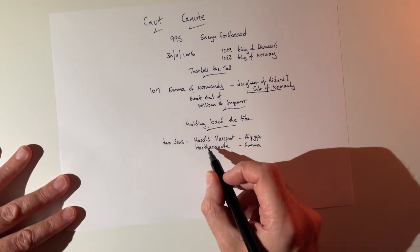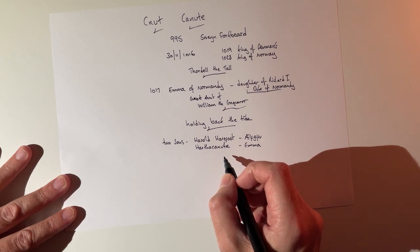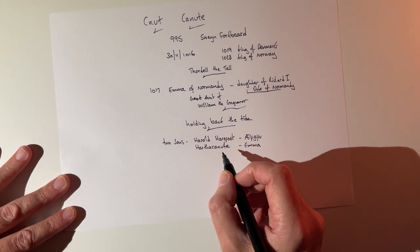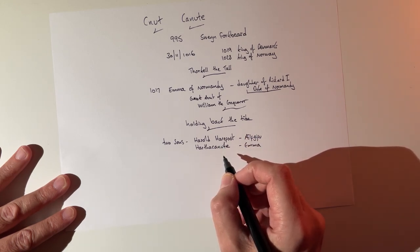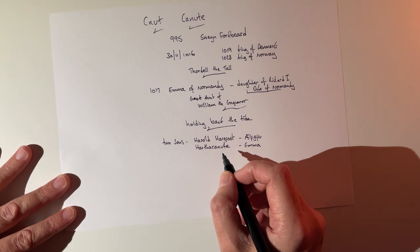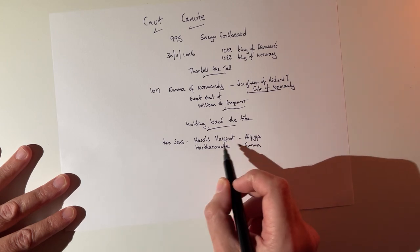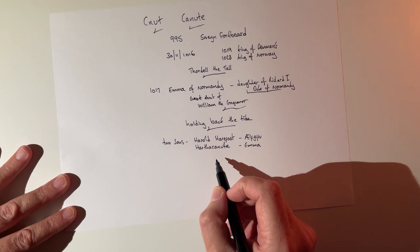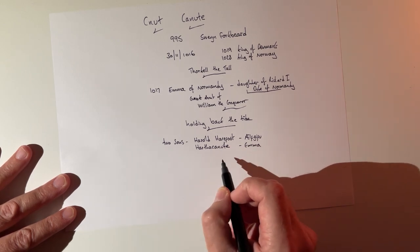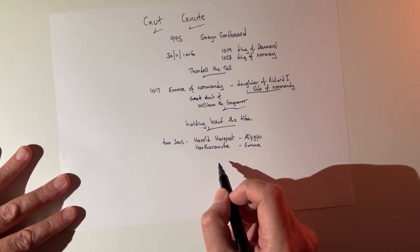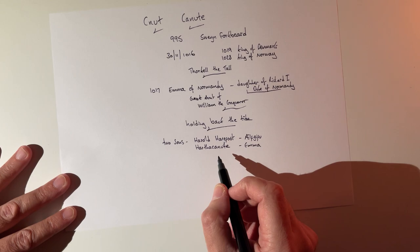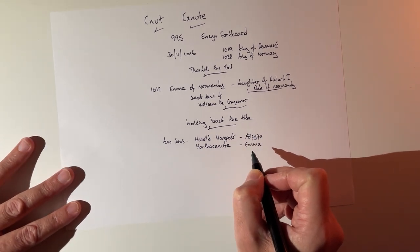Emma seemed to favour Harthacanute more than her own children from Aethelred. Two of those were still surviving: Edward, who would later be Edward the Confessor, and his brother Alfred. Edward and Alfred were in Normandy in exile, but she favoured her new son Harthacanute over them. Emma had been queen consort of two kings — the Anglo-Saxon king Aethelred and the Danish king Canute — a very complicated life she had.